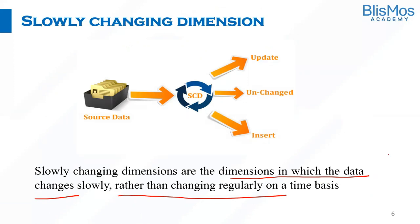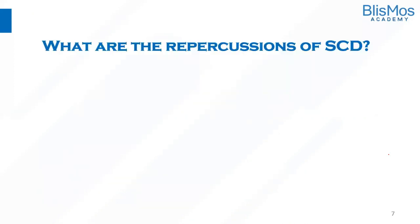All I'm trying to say is the data is non-volatile as compared to databases, but data does change in a data warehouse — that is called Slowly Changing Dimensions. Now, we understood that data does change in a data warehouse, but what are the repercussions of this? Is it good? Is it bad? Will that impact the performance of the data warehouse? How will it impact the quality of the analysis?